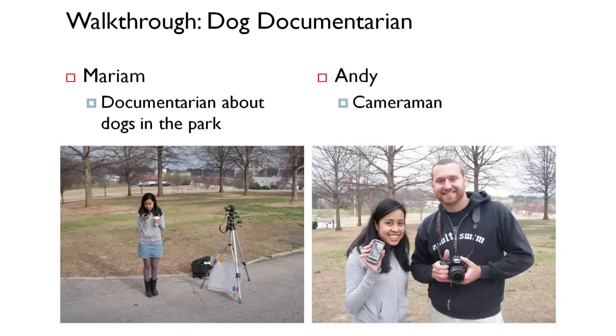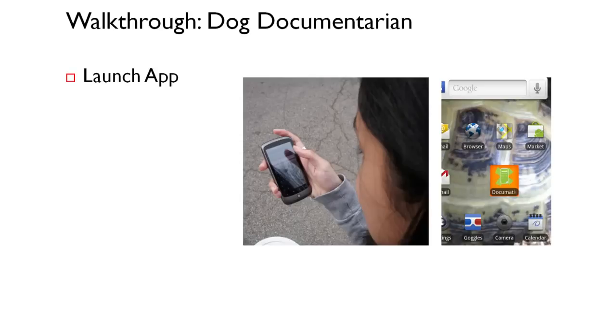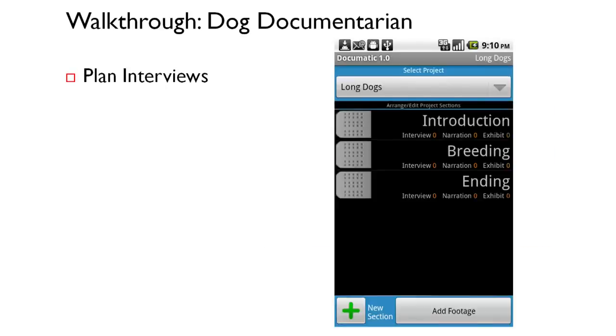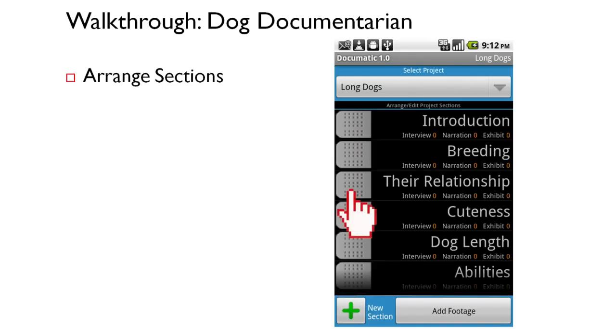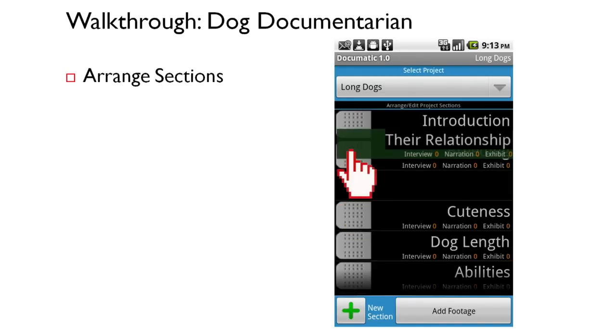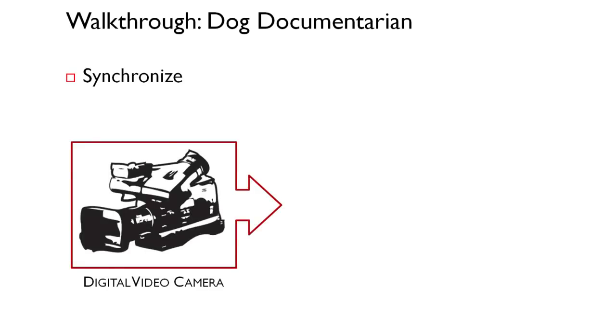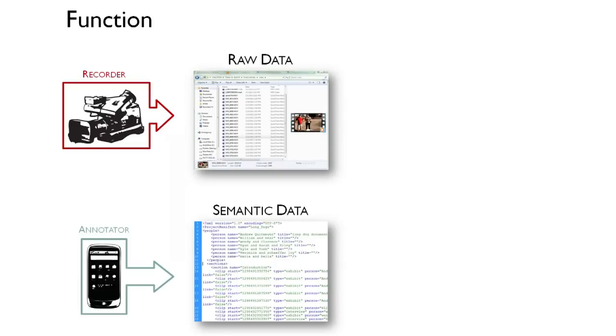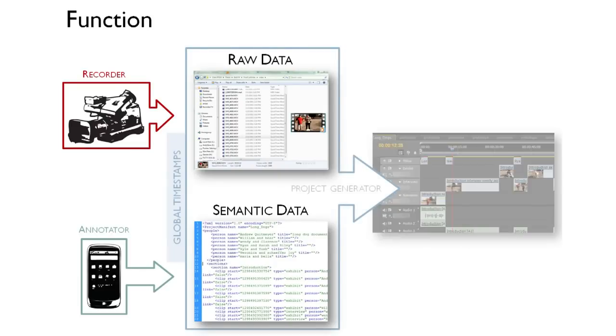Mariam served as the annotator and head interviewer, while I worked simply as the cameraman or recorder. To get set up, first, Mariam launches the app and plans and arranges her interview questions. These will serve as the overall structure for the eventual generated sequence. We also made sure to synchronize the current time on the camera with the time on the Android phone, since this is how the annotated data and the raw video data eventually get connected.